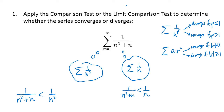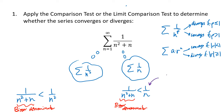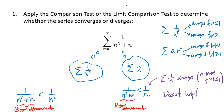In both cases, our fraction 1/(n²+n) is less than the comparison fraction because it has a bigger denominator — a bigger denominator with the same numerator means a smaller fraction. However, comparing to 1/n is not helpful, because the sum of 1/n diverges (it's a p-series with p = 1). Knowing our series is less than a divergent series doesn't constrain it at all.